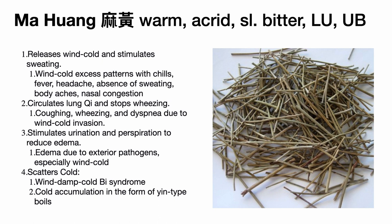Another important function of Ma Huang is that it circulates lung qi and stops wheezing. It treats wheezing, cough, and painful breathing due to wind-cold invasion. We can also use this herb to move stagnant fluids due to yang stagnation.